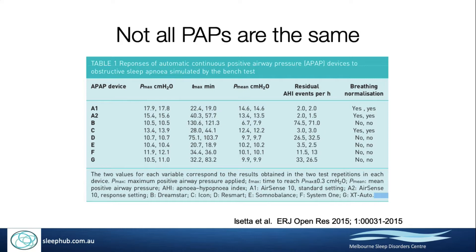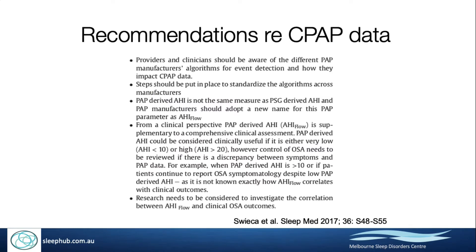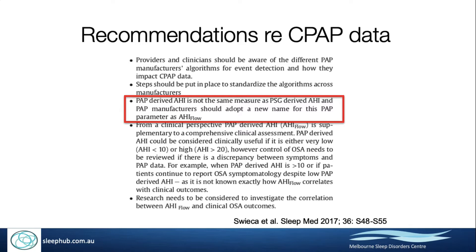Another way of looking at device performance is this graph from the Azeta paper. The blue line — the AirSense 10 in responsive mode — and the red line — the DreamStar — represent the two extremes of pressure response in the first 30 minutes of bench simulation. Twelve centimeters H₂O was indicated as the estimated pressure required to control sleep-disordered breathing. The AirSense 10 was quite responsive, while the DreamStar was not at all responsive. Based on this, the Australasian Sleep Association recommends we don't call the PAP-derived metric an AHI at all — calling it AHI-flow is proposed instead, by both the ATS and the ASA.